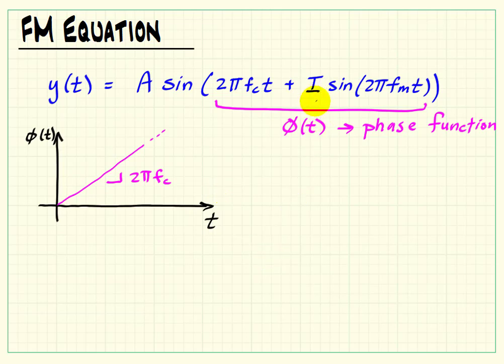And then added to this constant ramp, we have a sinusoidal variation superimposed. And the degree to which that sinusoidal variation is added to the constant ramp is given by the modulation index, capital I.